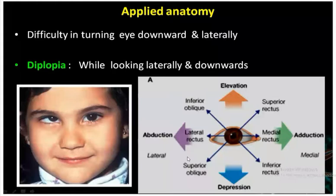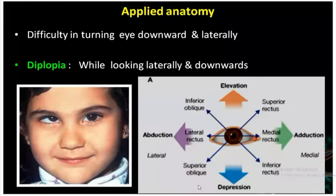If the trochlear nerve is damaged, the superior oblique muscle is paralyzed. You will not be able to turn the eye downward and laterally, so you will have difficulty in turning the eye downward and laterally. There will also be double vision when looking laterally and then downward. The eyeball will be positioned above the horizontal line.